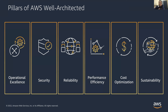The next two pillars — Performance Efficiency and Cost Optimization — go hand in hand. Performance Efficiency covers the ability to use cloud resources such as compute, memory, network, and database efficiently. Cost Optimization covers how to govern, monitor, and manage cloud usage and cost — because unless you do that you cannot claim you are truly cost-optimized. These recommendations ensure you are using resources in the most optimum way.